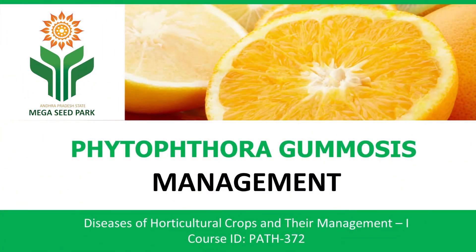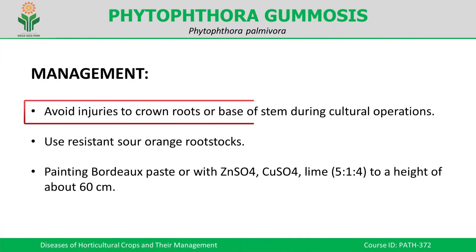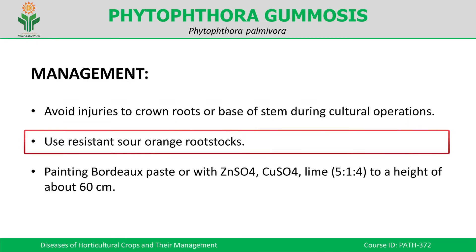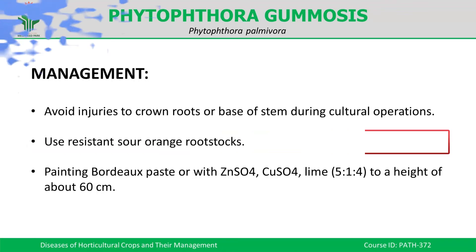Management is a very important aspect for any crop disease. Without proper management, just knowing symptoms, favorable conditions, and the disease cycle will not give any useful output. To manage this disease, we must avoid the conditions that favor the pathogen. First, we should avoid injuries because the pathogen sometimes enters through the crown roots. There should be no water stagnation near the base of the stem. We should use resistant sour orange rootstocks to manage the disease, as selecting resistant rootstocks completes about 50 percent of the job.